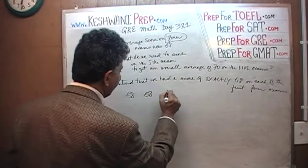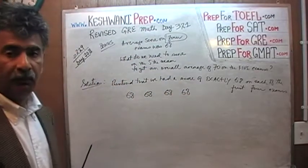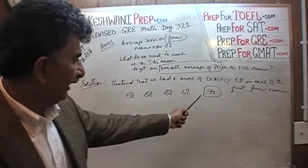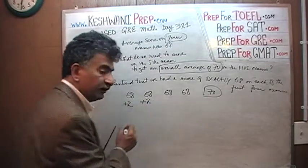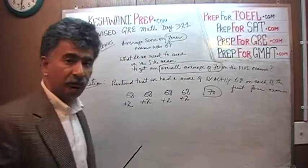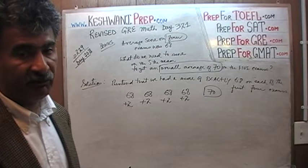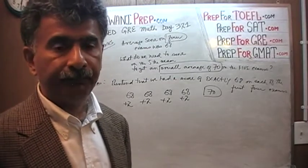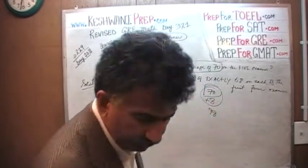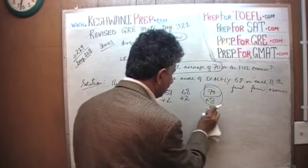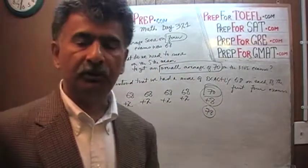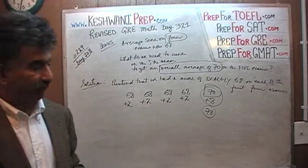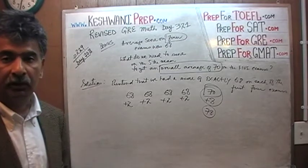So we have 68 on the 1st exam, 68 on the 2nd exam, 68 on the 3rd exam, and 68 on the 4th exam. We want an overall average of 70 — that is our goal. But we are 2 points short on every single one of them: 2 points for the 1st, 2nd, 3rd, and 4th exam. So we are 8 points short total, which means we need to score 78 on the 5th exam. The 8 extra points will be distributed among the first 4 exams, giving us an overall average of 70. That is all.